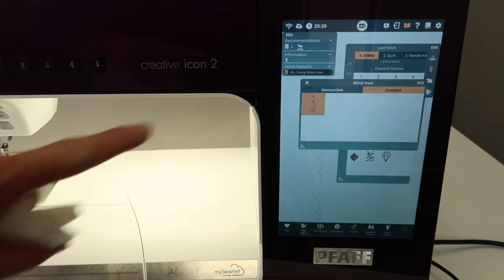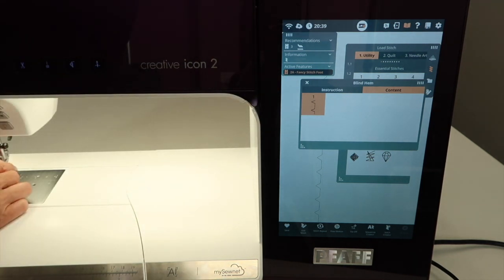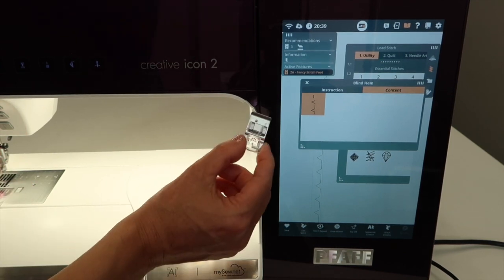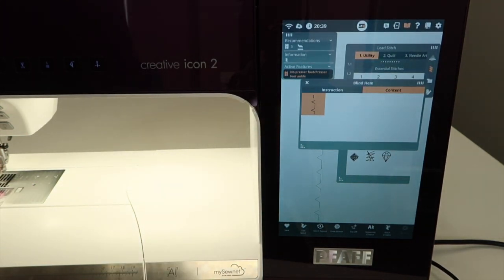Let's go ahead and take a look. It sees that I have a different foot on. I have foot 2A on. As soon as I pull that off, then it is going to recognize that I don't have a foot on.